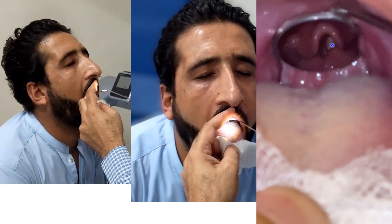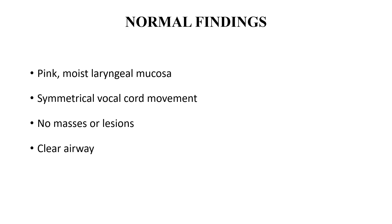This is the epiglottis and the white structures inside are the true vocal cords. The normal findings which we can see are: pink moist laryngeal mucosa, symmetrical vocal cord movements, no mass or lesion visible, and a clear airway.